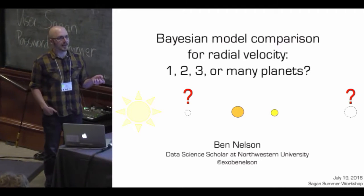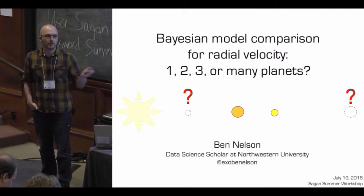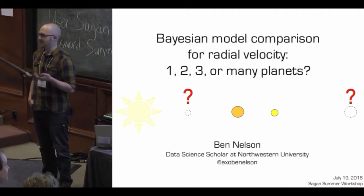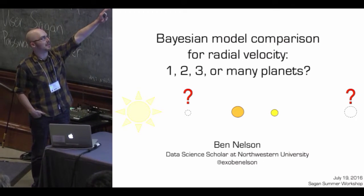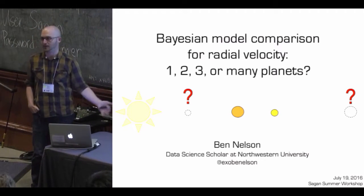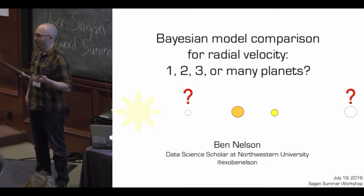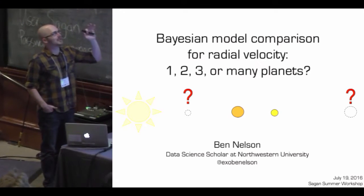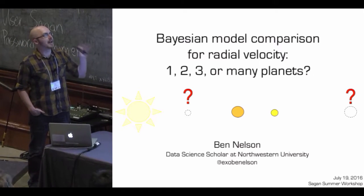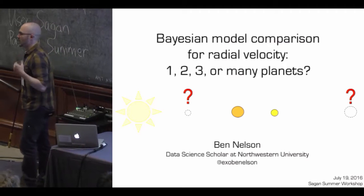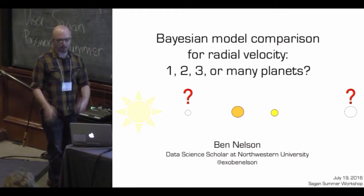When I was given this talk title and was putting the talk together, I realized that a lot of people attending this meeting don't necessarily work on radial velocity. Some people here aren't even interested in this particular question of how many planets can be inferred from a particular data set. So rather than alienate a large fraction of people here, I'm going to give a general talk on Bayesian Model Comparison and the pragmatic aspects of that, with a couple of radial velocity examples.